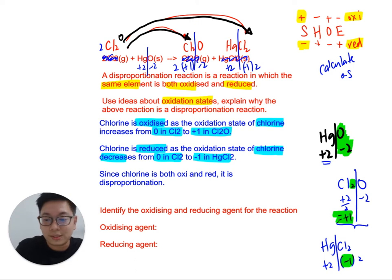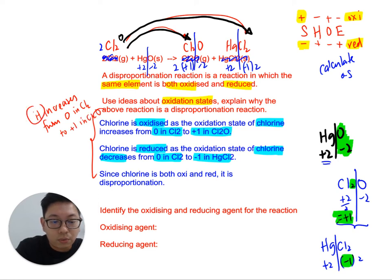All right, now a few common mistakes. Please do not write it increases from zero in Cl2 to plus one in Cl2O. Now, what is this it? All right, or chlorine increases. All wrong. You must write oxidation state of chlorine. This it could be what? The money, the friends, what? What is it? So, the oxidation state of chlorine increases. The oxidation state of chlorine decreases. So, that is for part one.